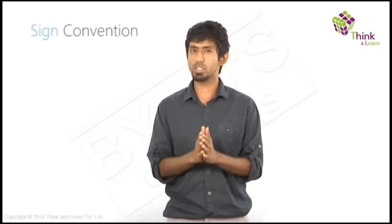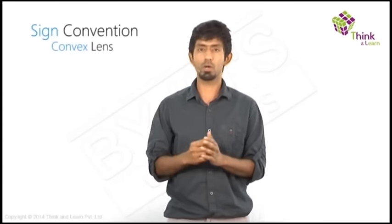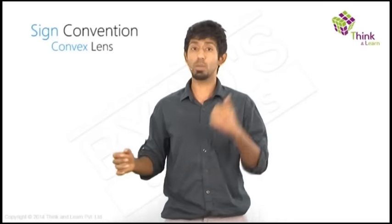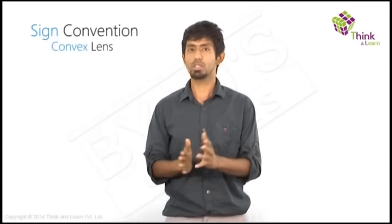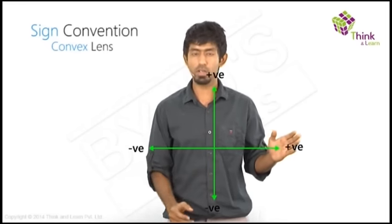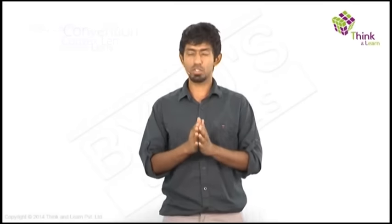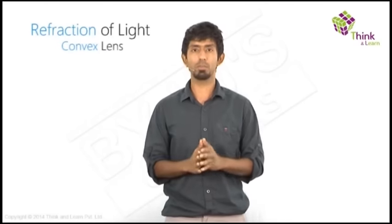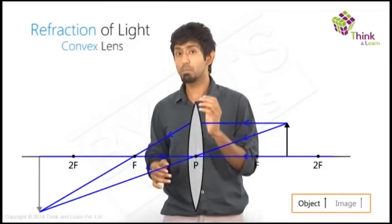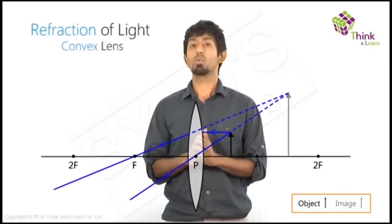And you can continue to do this. And we also have a sign convention that we saw, which we will talk about when we talk about deriving the lens formula, like we did the mirror formula. So the sign convention remains the same. What was that? Right positive, up positive, left negative and down negative. So having understood this, having seen all these images being formed, beyond 2f, between f and 2f, before f and all of these, what do you infer?